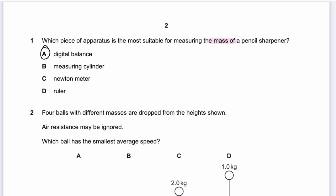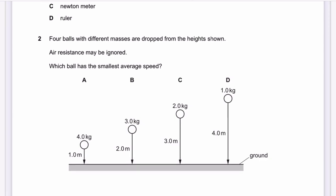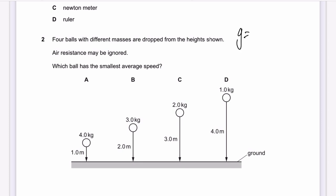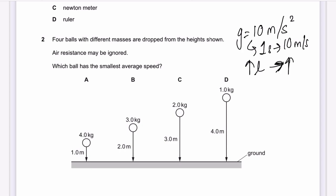Question 2: Four balls with different masses are dropped from the heights shown. Air resistance may be ignored. Which ball has the smallest average speed? When something falls due to gravity, it accelerates. That acceleration is called the acceleration of free fall, g, which is 9.81 m/s² — but for Cambridge we use 10 m/s² for easier calculation. After every one second, speed increases by 10 m/s, so the more distance covered, the higher the speed.